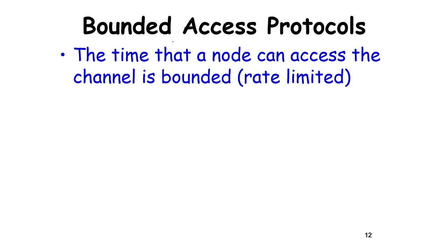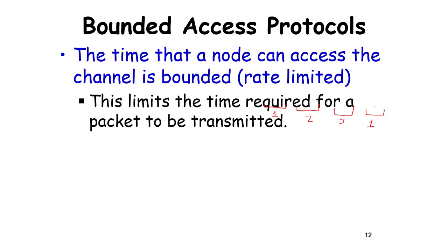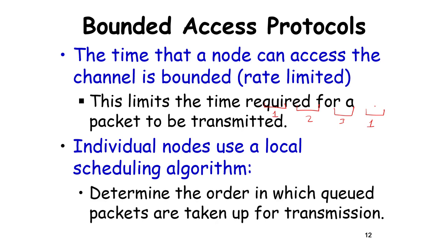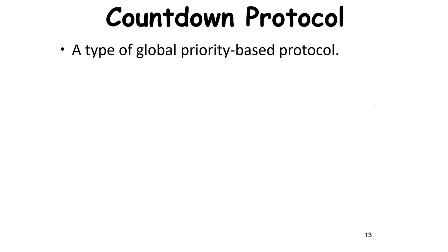The bounded access protocol ameliorates problems with the calendar-based protocol. The time a node is allowed to access the channel is bounded — similar to a round-robin scheduler where node 1 gets some time, then node 2, then node 3. Instead of maintaining an explicit list, you put a bound on the time, which also bounds the amount of data that can be transmitted. Nodes then use a local scheduling algorithm to decide which packet to send first.